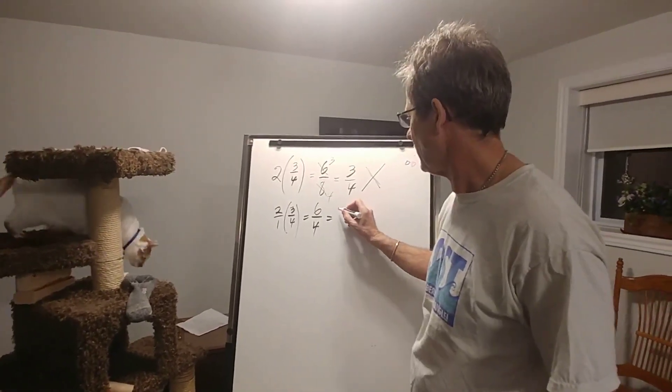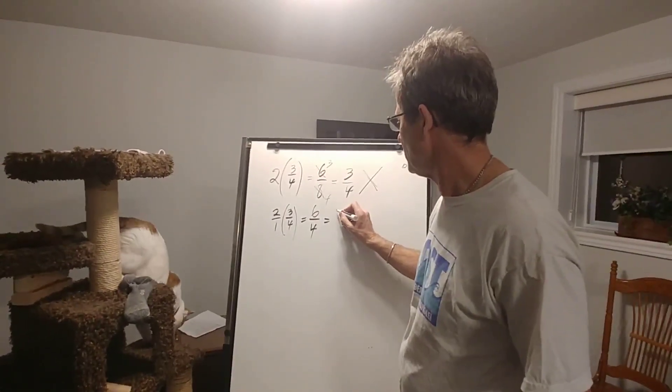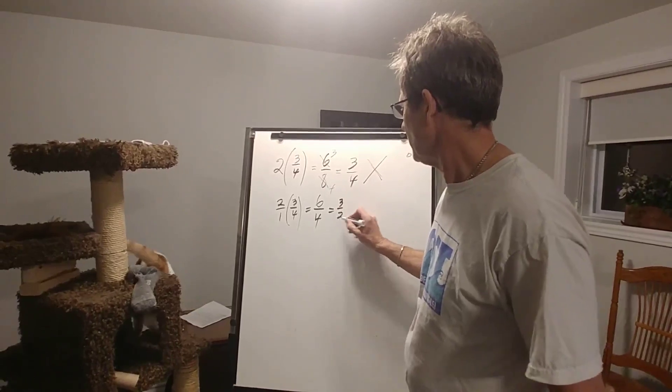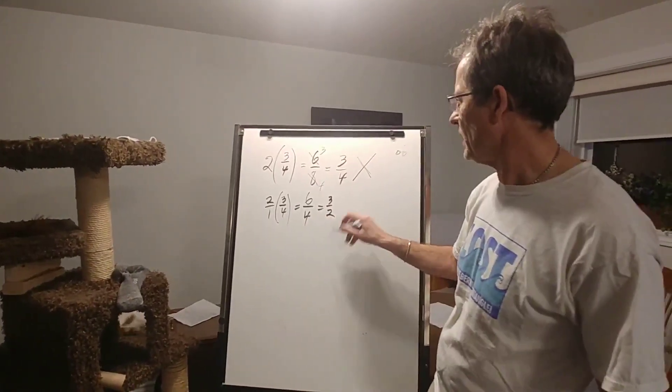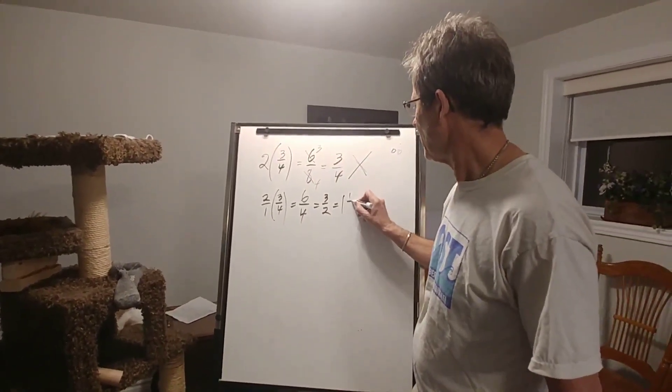That can be reduced as well. If I divide top and bottom by two, then I'll get three over two. So two times three quarters is three halves or one and a half.